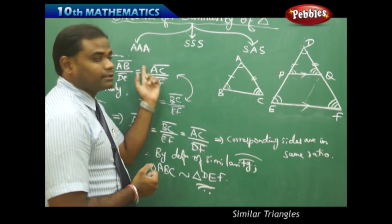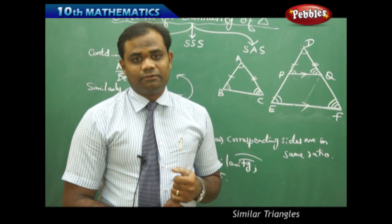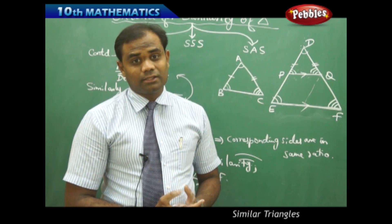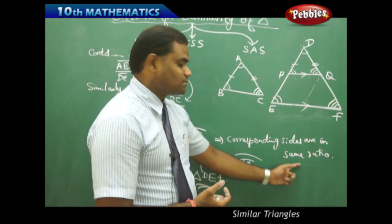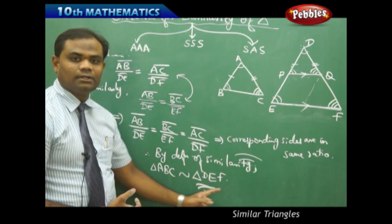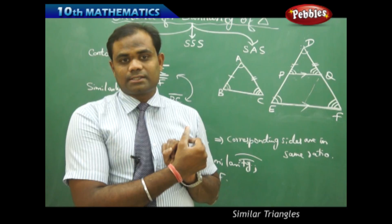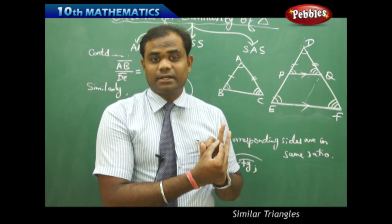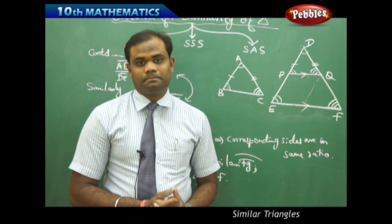The AAA criterion for similarity of triangles means that if I have the minimum condition of the three angles — corresponding angles being equal — then obviously the corresponding sides will be in the same ratio as derived in the proof. Hence, by definition of similarity, both properties are satisfied: property 1, the corresponding angles are equal, and property 2, the corresponding sides are in the same ratio, and hence the two triangles are similar.